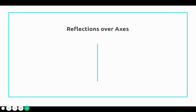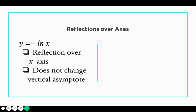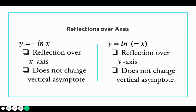The other type of transformation is reflection over axes. y equals negative natural log of x is a reflection over the x-axis, and it does not change the vertical asymptote. If we have y equals natural log of negative x — the negative sign is with the x — that's a reflection over the y-axis, and this one also does not change the vertical asymptote.